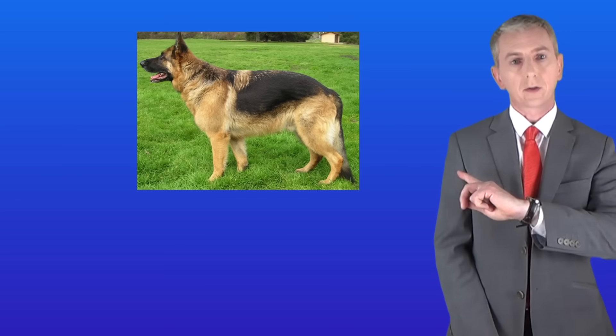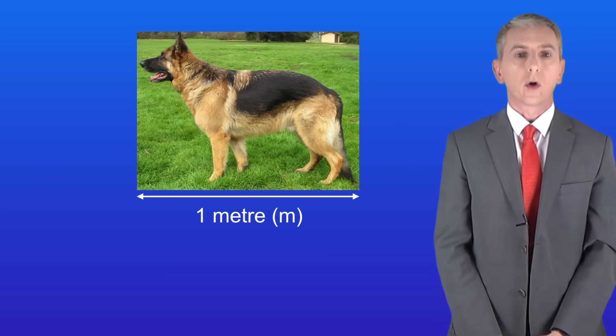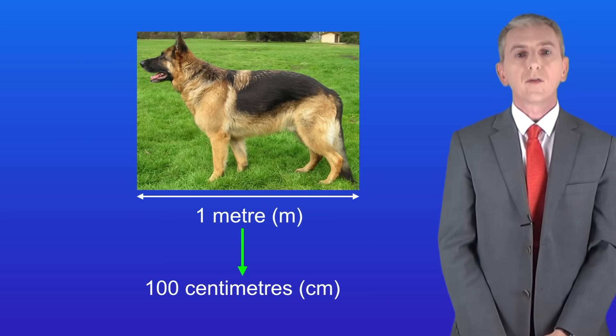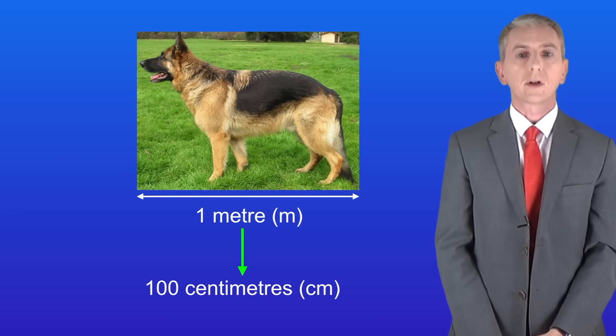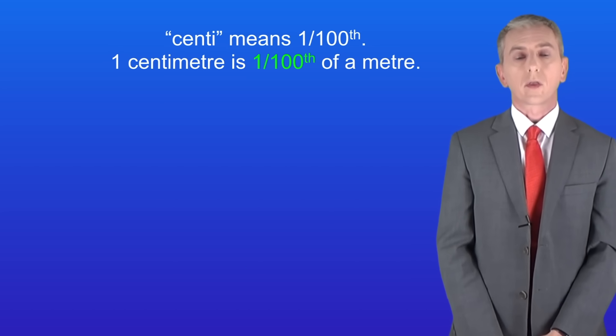I'm showing you here a German Shepherd and the average length of a dog like this is around one meter. If we divide one meter into 100 equal parts then we've got one centimeter. The word centi means one hundredth so one centimeter is one hundredth of a meter.